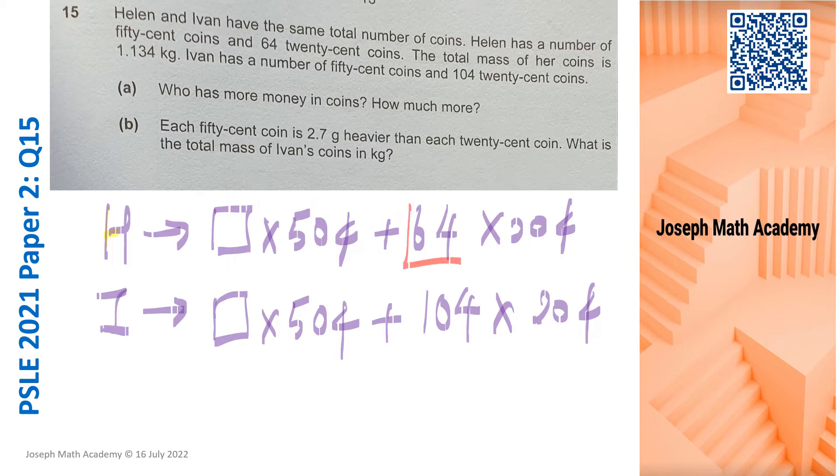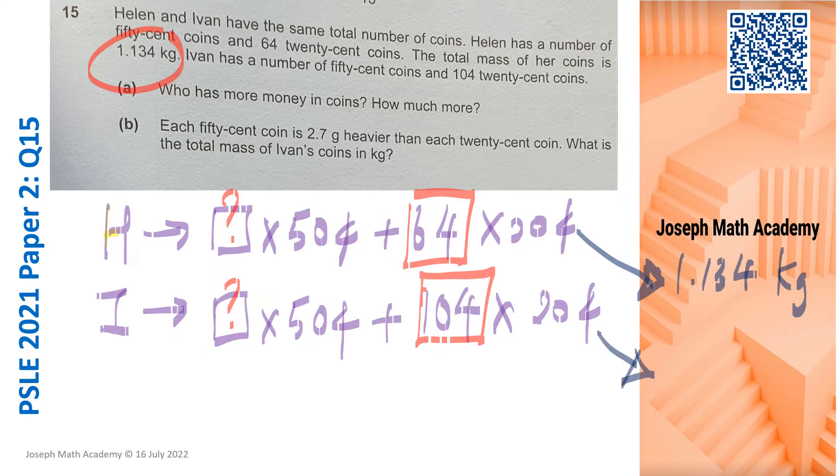So we only know this information for Helen and this information for Ivan. Now we also have another information here. Helen's coins, the total mass is 1.134 kg. Now we are not sure about Ivan's total coin mass. We are supposed to find it in part B. So to do this question, I am going to do part A first in the next slide.